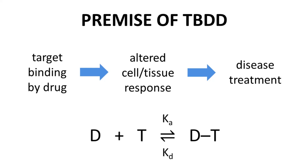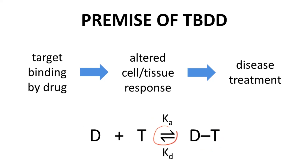The reaction below describes this binding event. The drug, D, binds the target, T, to form a drug-target complex. Most drugs bind a target reversibly, so drug binding is an equilibrium process. As an equilibrium, we can quantify it through either the association equilibrium constant, KA, for the forward process, or the dissociation equilibrium constant, KD, for the reverse process. Almost always researchers focus on KD.